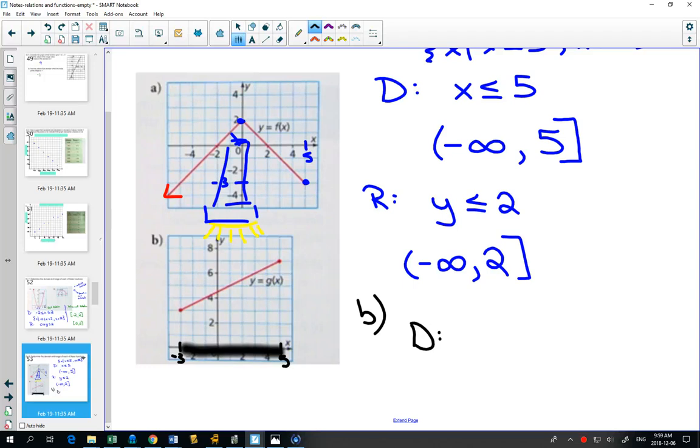How do I write my domain in set notation when it goes from negative 3 to 5? Well, negative 3 is less than or equal to x, and x also has to be less than or equal to 5. And so when x is between negative 3 and 5, we write the x in the middle with less than or equal signs.